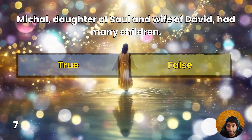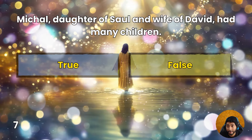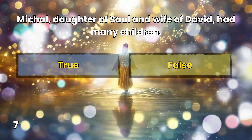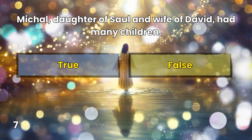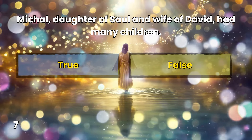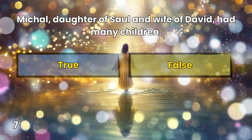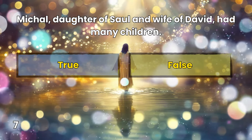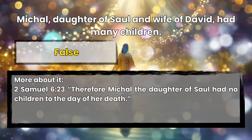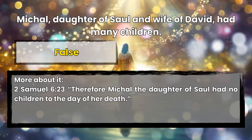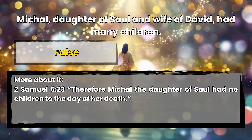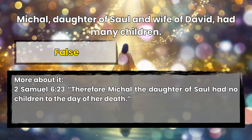Question 7: Michal, daughter of Saul and wife of David, had many children. False. 2 Samuel 6:23 — Therefore Michal, the daughter of Saul, had no children to the day of her death.